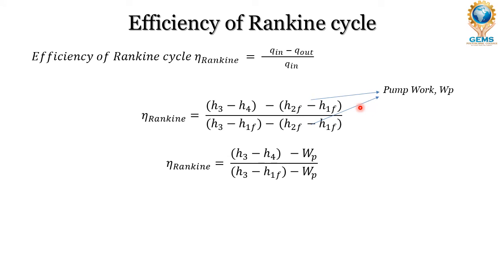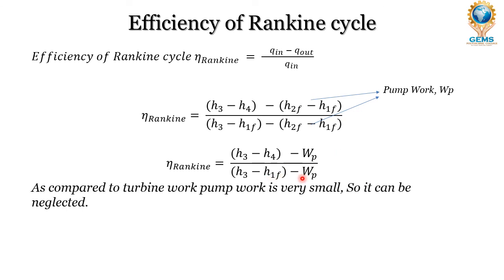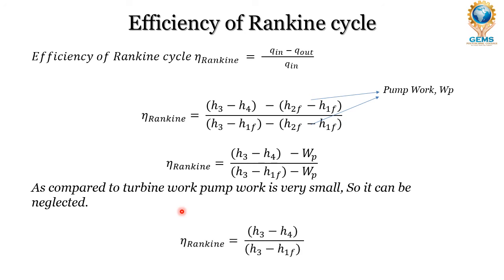The final answer is: Rankine cycle efficiency equals H3 minus H4 minus pump work, divided by H3 minus H1F minus pump work. Throughout the Rankine cycle, pump work is very small compared to turbine work — it is negligible and can be neglected without making much difference to the equation. So the simplified final Rankine cycle efficiency is H3 minus H4 divided by H3 minus H1F.